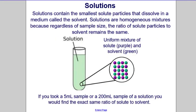Solutions contain the smallest solute particles, and those particles dissolve into the medium, which we call the solvent. Solutions are homogeneous mixtures, meaning that regardless of the sample size, the ratio of solute to solvent remains the same — the solute particles are evenly distributed throughout the solvent. Whether you take a sample from the top or the bottom of the solution, the ratio of solute to solvent would be the same.